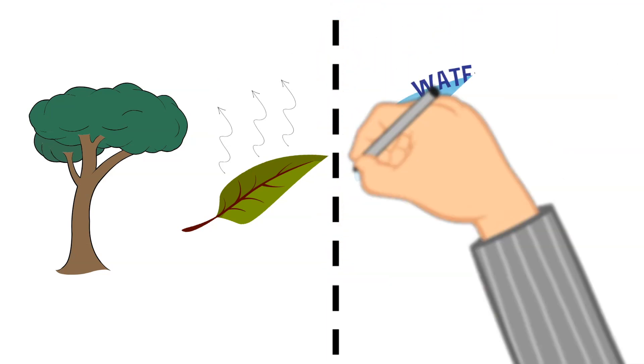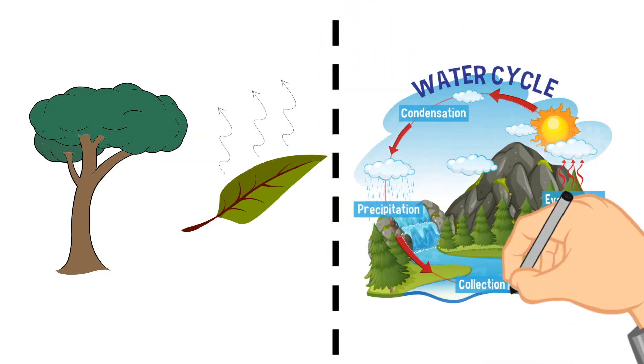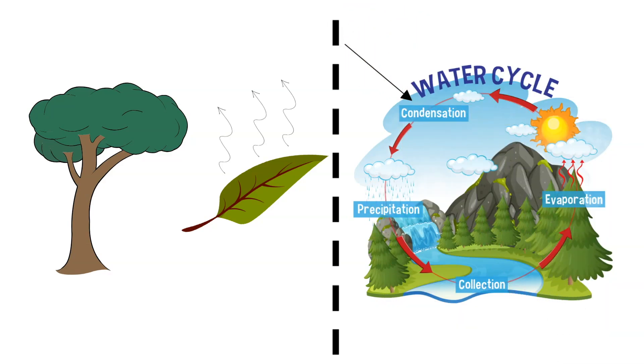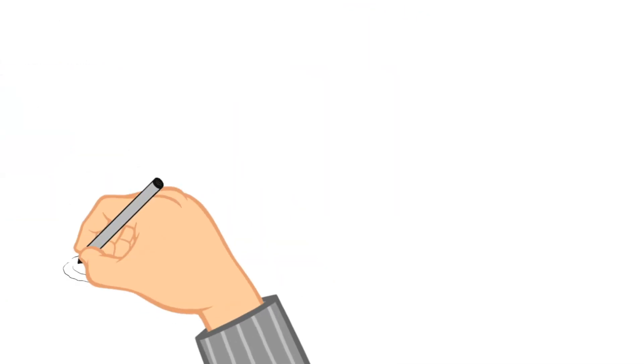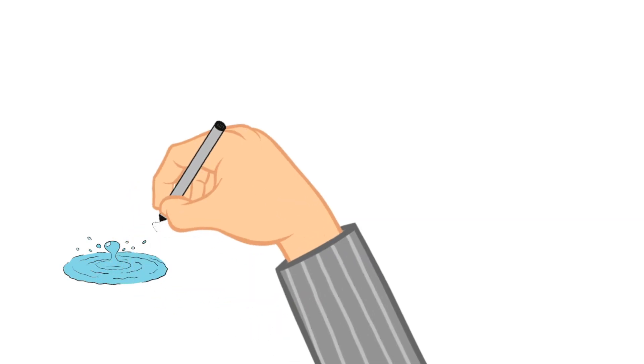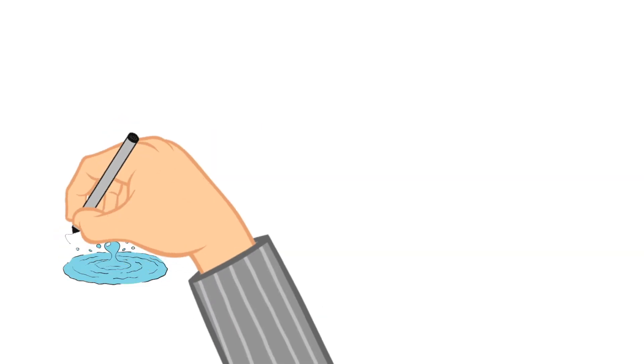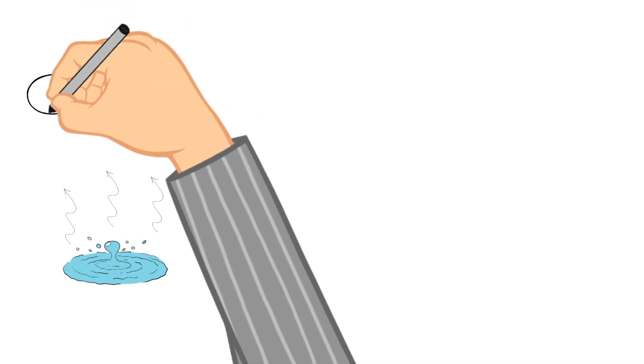Now let's move through the water cycle into condensation. As the water vapor rises into the sky, it then cools and turns back into a liquid. This process forms clouds.